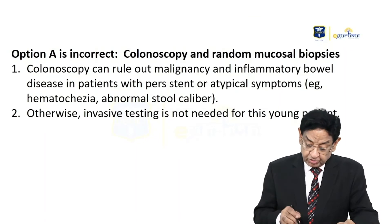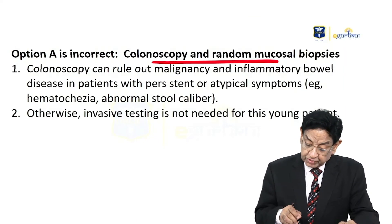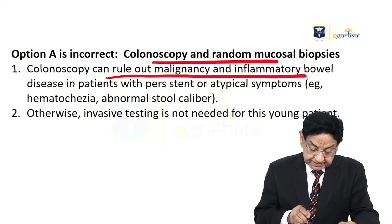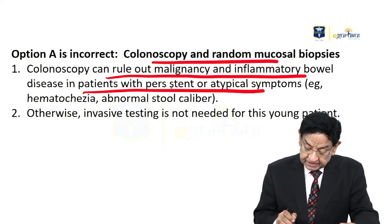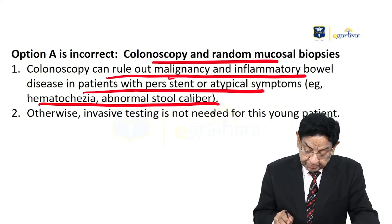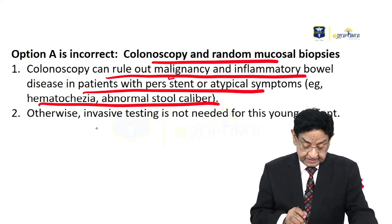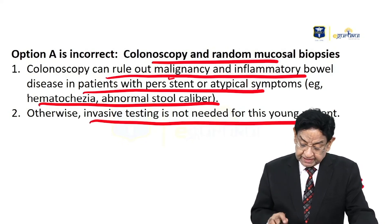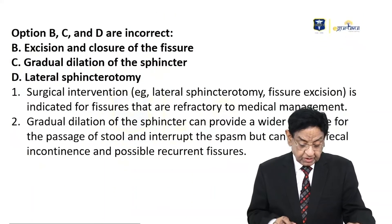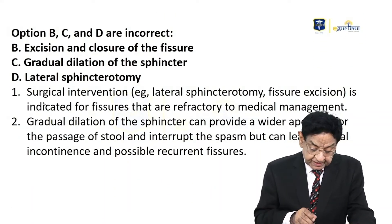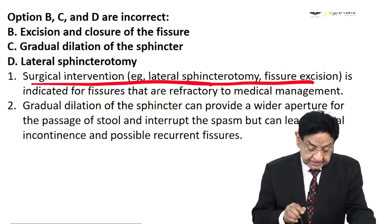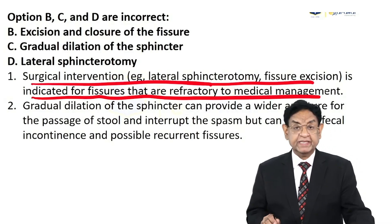Option A — colonoscopy and random mucosal biopsy — is incorrect. Colonoscopy can reveal malignancy and inflammatory bowel disease in patients with persistent or atypical symptoms like hematochezia or abnormal stool caliber; otherwise, imaging is not needed in this young patient.